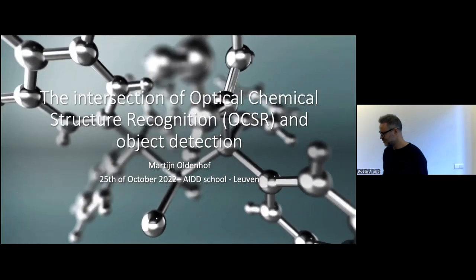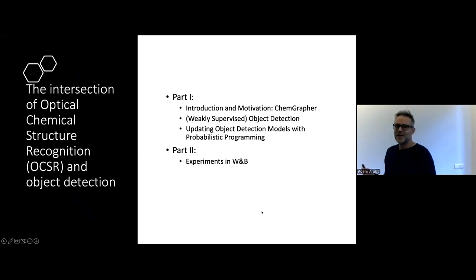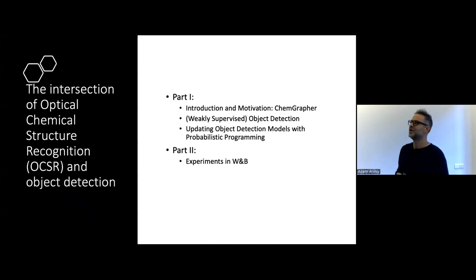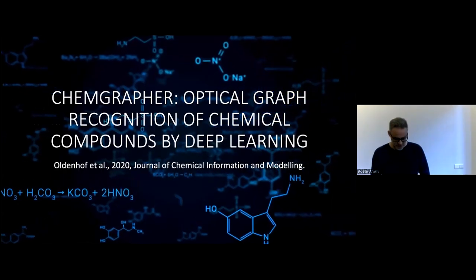The presentation today will be in two parts. The first part will be about research on optical chemical structure recognition and its relation with object detection. Then I hope to have some time to give you practical guidelines on Weights and Biases, the tool we used for all the experiments in this research — it may also help you organize your own experiments.